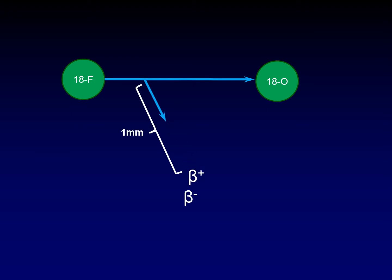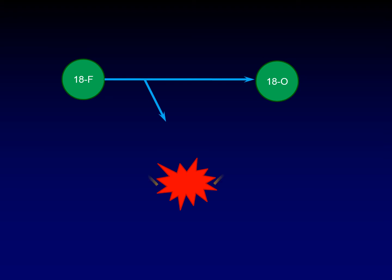The positron just wanders off and travels about a millimeter when it encounters an electron. The positron and the electron annihilate one another and there's an explosion — very small relative to a human being, but very large relative to an electron. This explosion creates a tremendous amount of energy via E=mc², and that energy is dispersed as two photons that shoot off in completely opposite directions.